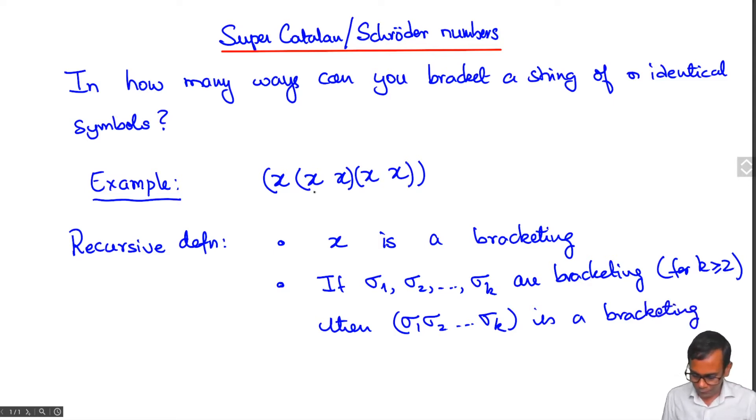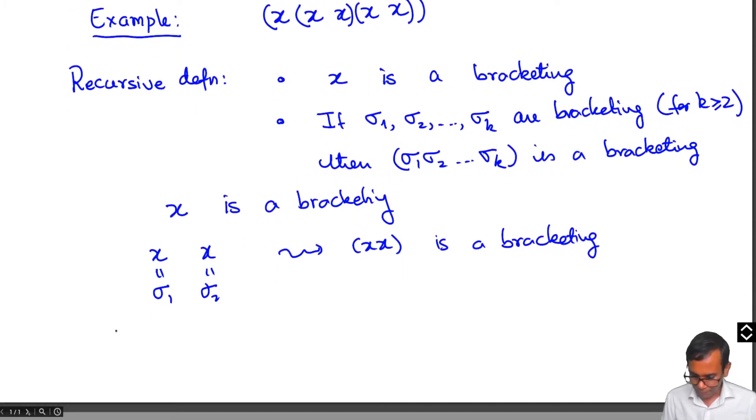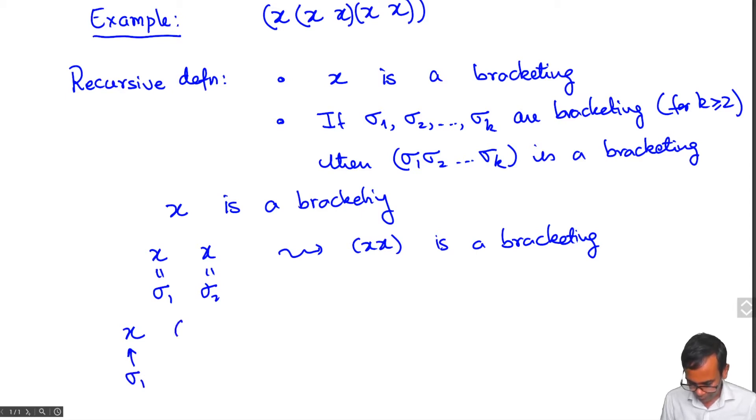This example is obtained by firstly, x is a bracketing by the base case of the recursive definition. Then if we take sigma 1 equals x, sigma 2 equals x, then (xx) is a bracketing. Now I take x as sigma 1, (xx) as sigma 2, (xx) as sigma 3, and with this I get ((x)(xx)(xx)) is a bracketing.